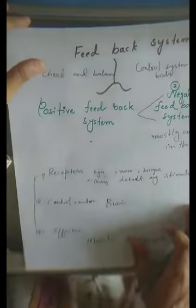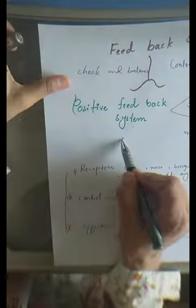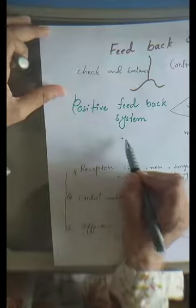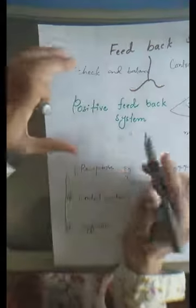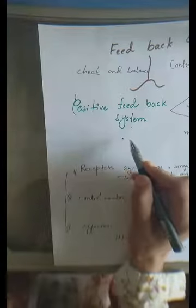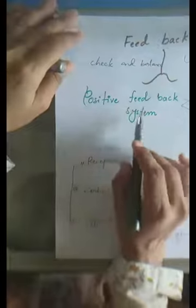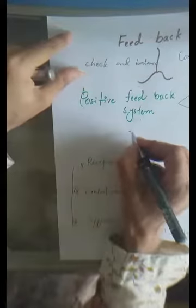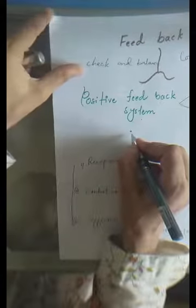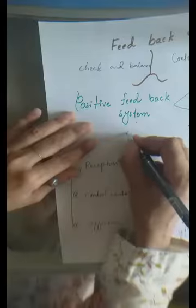The positive feedback system is mostly harmful for us. If the concentration of sugar increases in the body, it leads to diabetes. If the temperature of the body increases, it will lead to heat stroke. So positive feedback is mostly harmful. However, in a few conditions, positive feedback system is beneficial — for example, in females during the delivery of a baby, it increases the production of oxytocin hormone.